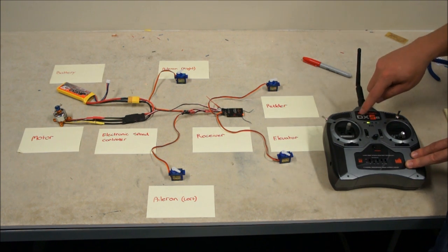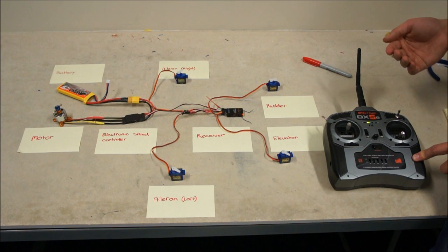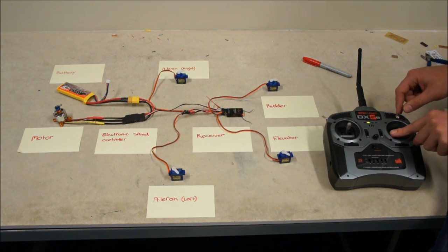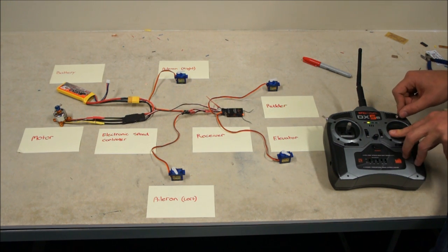Now the DX5 has a dual rate switch so that when you're taking off or landing, you don't have full movement in each of the control surfaces. You can flick that down to low. So you can see I don't have as much movement now, it's 70% so that's 100, that's 70%.